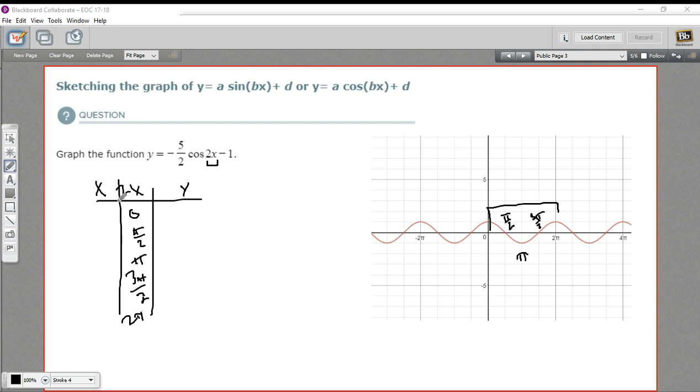So how do I get x values if this is what 2x is? Well, it's just half of that. So half of 0 is still 0. Half of π over 2 is π over 4. Half of π is π over 2. Half of 3π over 2 is 3π over 4. And half of 2π is π.